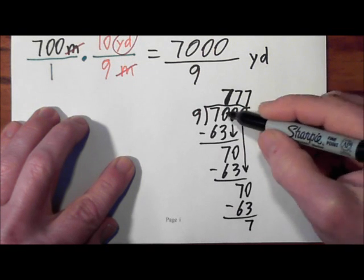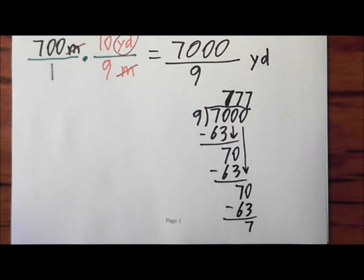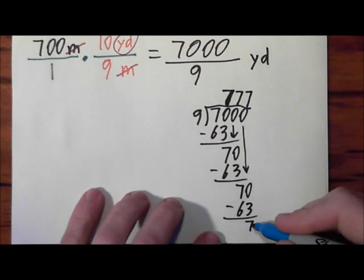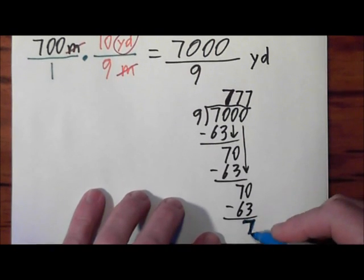I've used up all my digits, right? And they want a mixed number. So that means this 7 right here, we'll see if we can make that a blue 7. That 7 is the remainder.